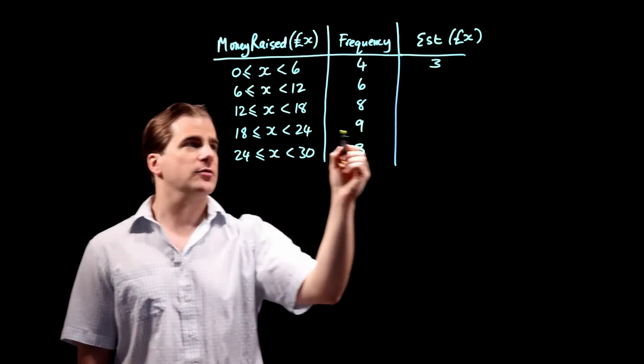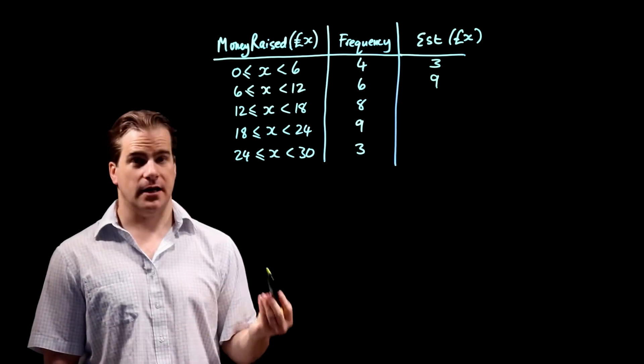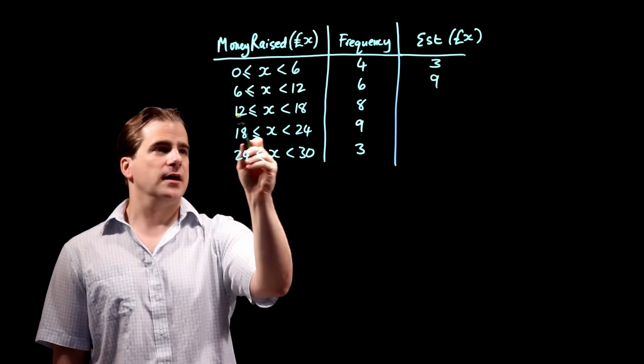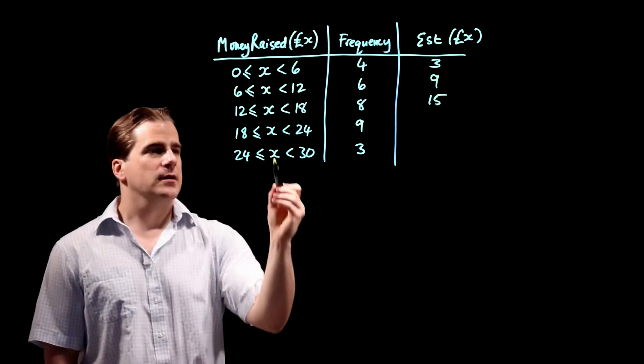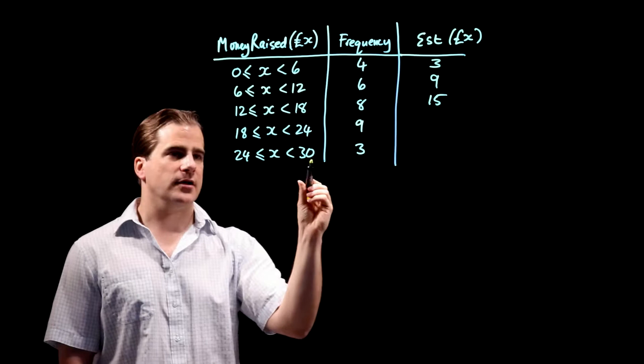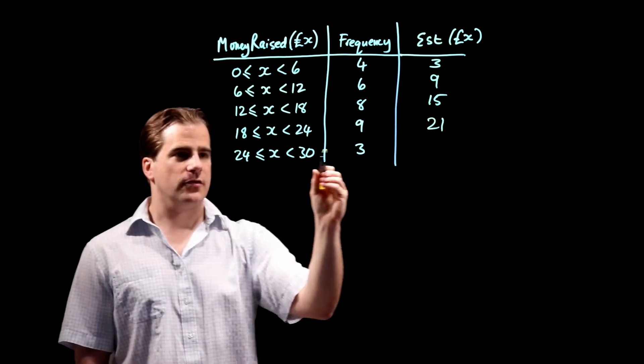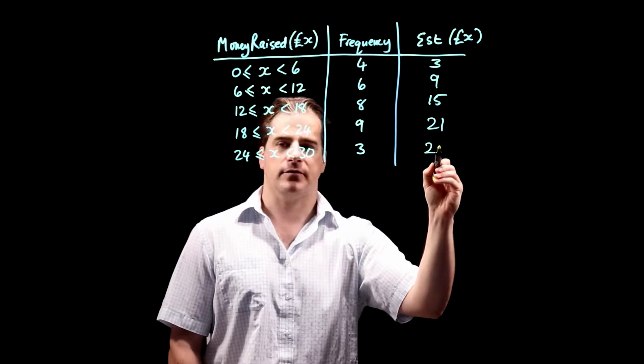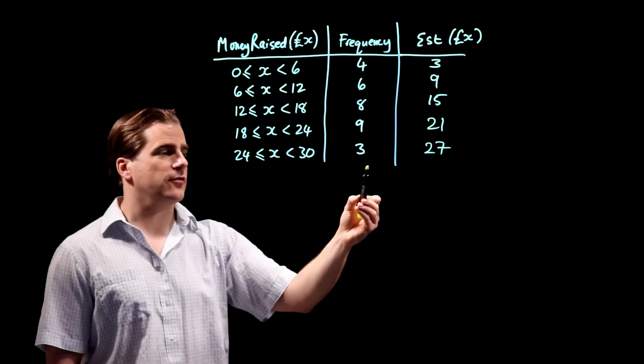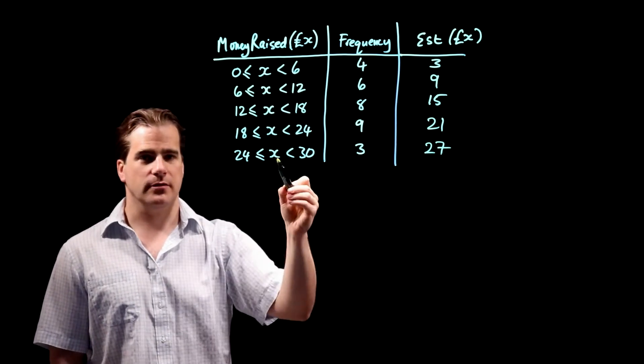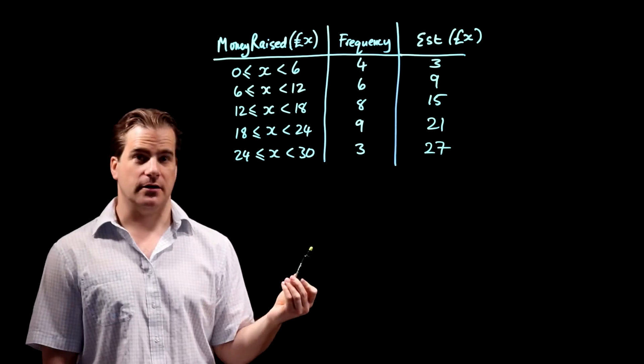And likewise here, six and 12, you assume that on average they raised nine pounds. And here, midpoint of 12 and 18 is 15. Here, 18, 24, it's 21. 24 and 30 is 27. So you introduce this column for the amounts that you assume, because it's the midpoint these people have got.